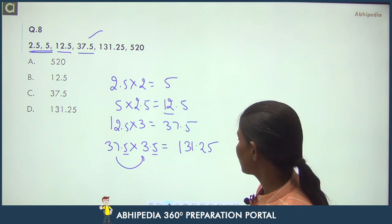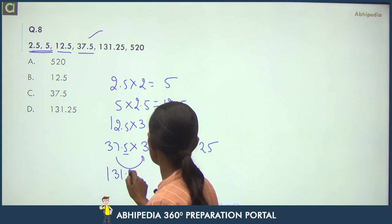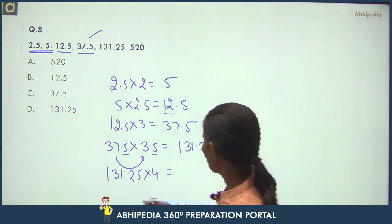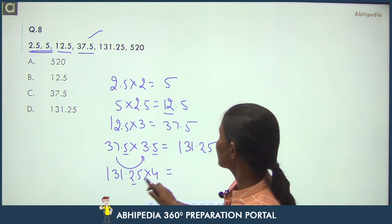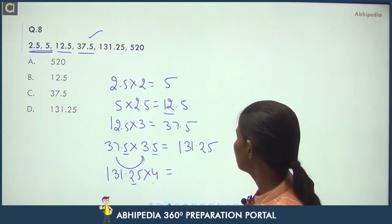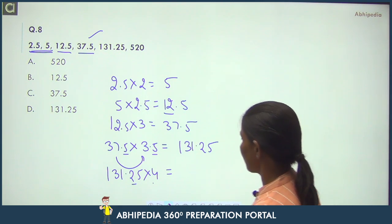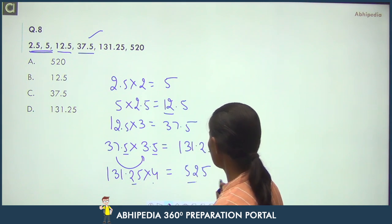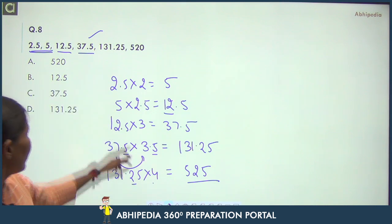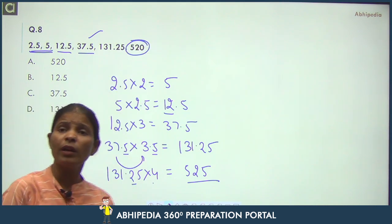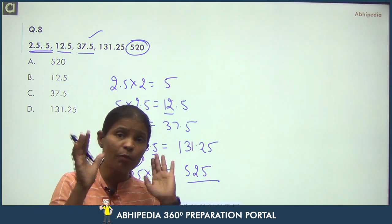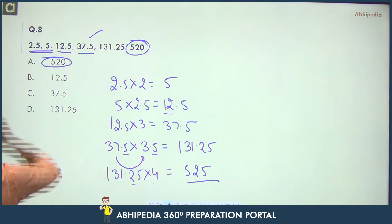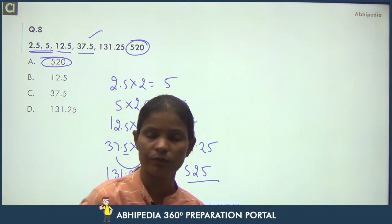Continuing: 130.25 × 4 = 521... checking: 130.125 × 4 = 520.5, but given is 520. Actually the correct term should be 525 (131.25 × 4 = 525). So 520 is the wrong term and in its place there should be 525. Your answer is 520. The multiplier pattern is 2, 2.5, 3, 3.5, 4, 4.5.